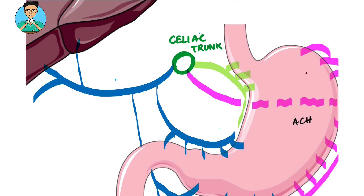The green branch goes along the upper part of the lesser curvature of the stomach, and this artery is known as the left gastric artery. It supplies the upper part of the lesser curvature.